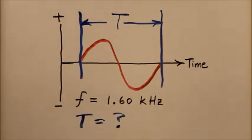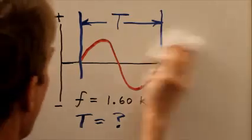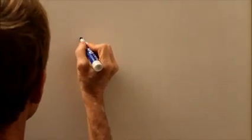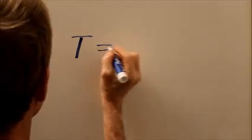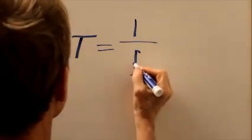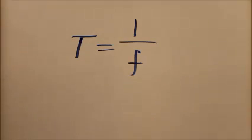In any periodic wave that repeats at a constant rate or a constant frequency, the period is equal to 1 over the frequency, that is the reciprocal of the frequency, provided that we express the frequency in Hertz. Then we get the period in seconds.